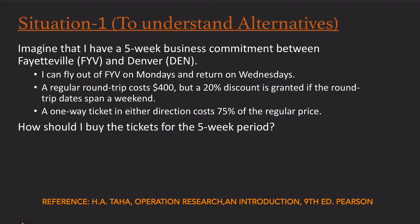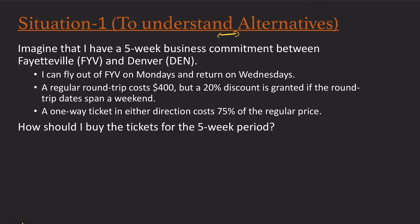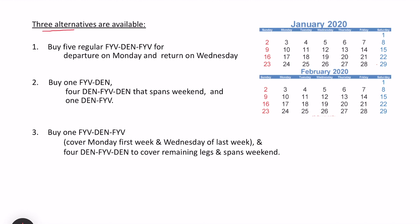In situation one, I am trying to understand what is meant by alternatives. Imagine I have a five-week business commitment between Fetival and Denival. I can fly out of Fetival on Mondays and return on Wednesdays. A regular round trip costs $400, but I get a 20% discount if the round trip dates span a weekend. A one-way ticket in either direction costs 75% of the regular price. Based on these conditions, what should be my decision for the five-week period? I have three alternatives available.